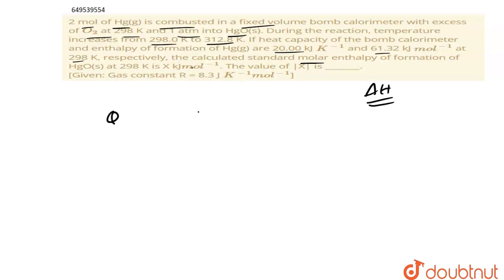The bomb calorimetry is Q reaction equals C delta T, heat capacity multiplied with change in temperature. That means del U multiplied with 2 equals 20 into 14.8. So del U becomes what?